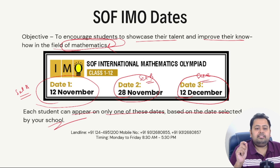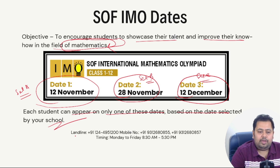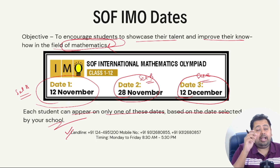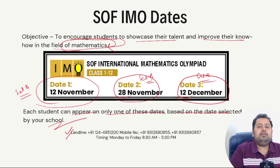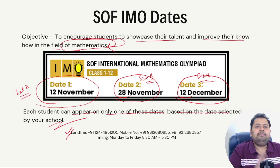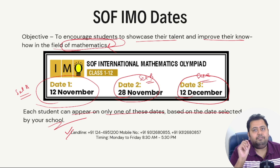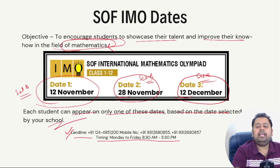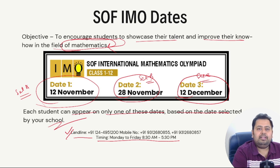If your school is not conducting the SOF IMO, you'll have to call SOF directly. SOF will contact your school and try to convince them to conduct the Olympiad. If that doesn't work, SOF will try to find another way — tagging you to a coaching center or similar. The contact numbers are available, and you can call Monday to Friday, 8:30 AM to 5:30 PM.